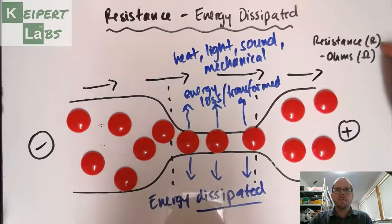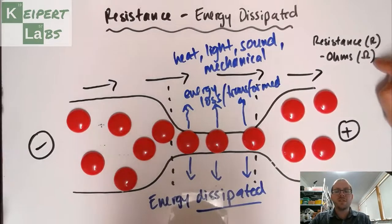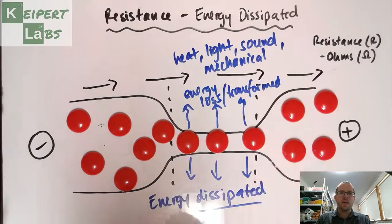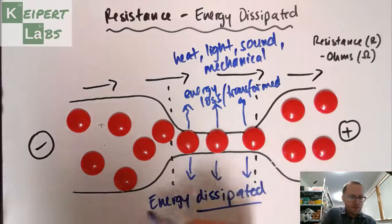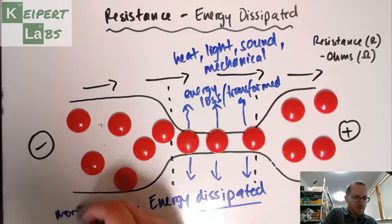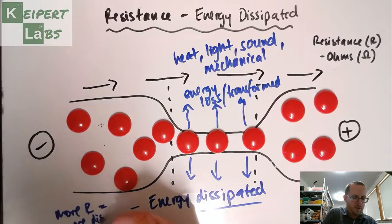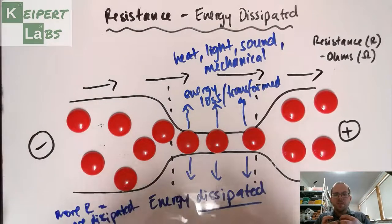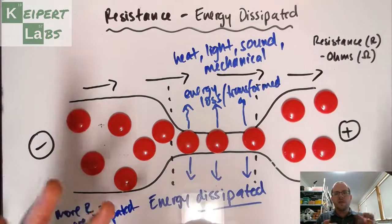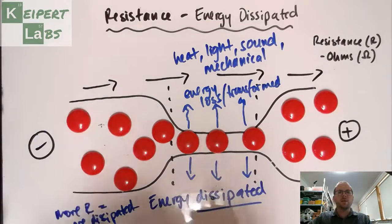Resistance is a property — we give it the capital letter R as our symbol, and we measure resistance in ohms. The more resistance, the more energy that's dissipated — more energy being lost from the circuit and needing to be replaced as we make our way back to the voltage.